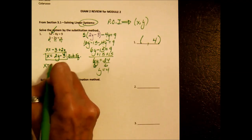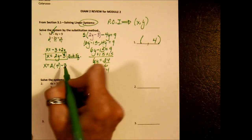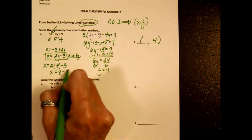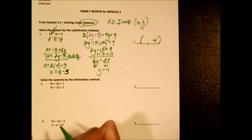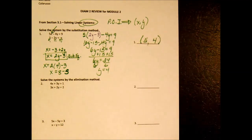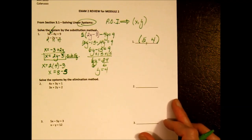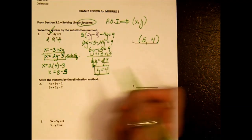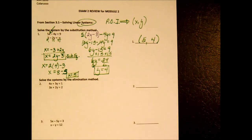x equals 2 times whatever we found for y, minus 3 — so x equals 8 minus 3, which is 5. Our point of intersection is the point (5, 4). Just remember you're not finished until you end up with both an x and a y.